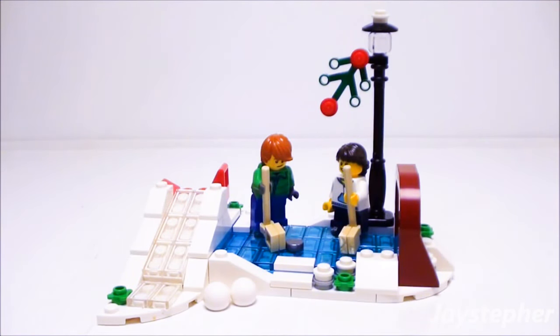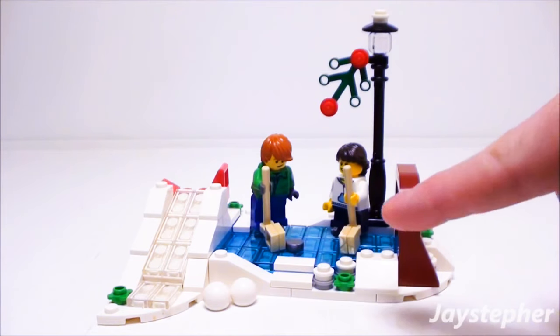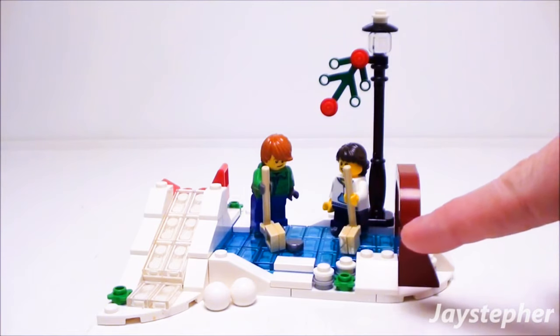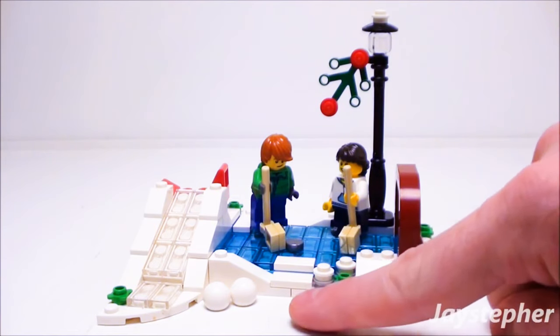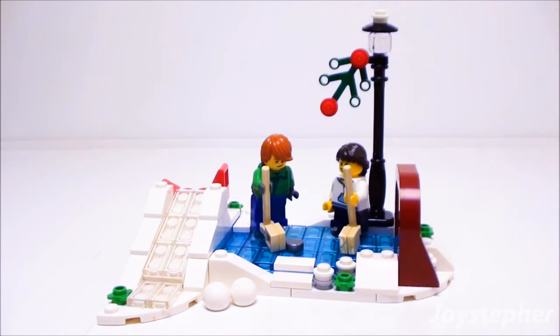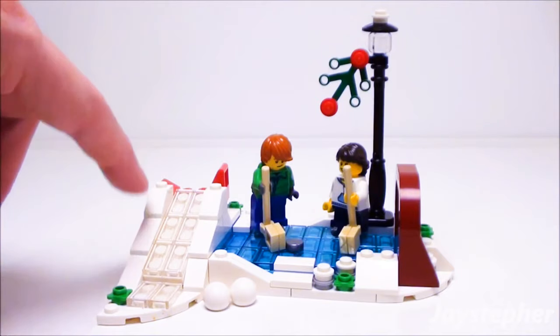In my opinion, this is one fantastic set. You get two minifigures, two sets of ice skates, a pair for each minifigure, two hockey sticks, a couple of hockey pucks, and two balls of snow. As an added bonus, you even get a sleigh, which easily glides down the hill.